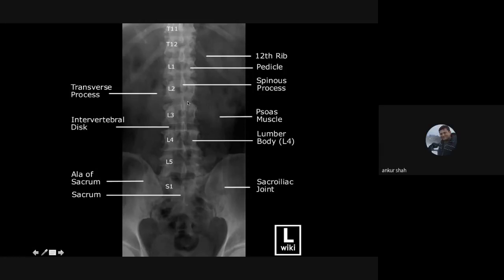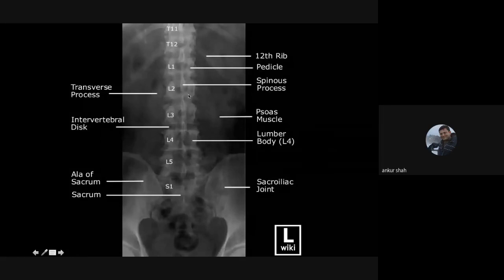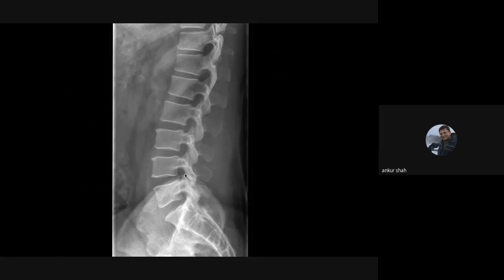Always check the spinous process: if a laminectomy has been done, the spinous process will be absent. In spina bifida, the spinous process may not be visible at L5 or S1. If you don't see the spinous process at other levels, ask about previous surgery. On lateral radiograph, you can clearly see the intervertebral disc space, vertebral bodies, and pedicles — always look for normal mineralization, osteophytes, or degenerative changes.